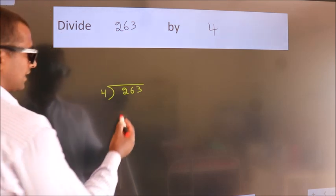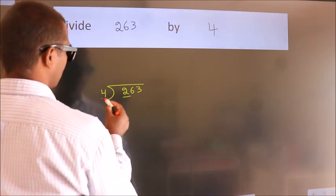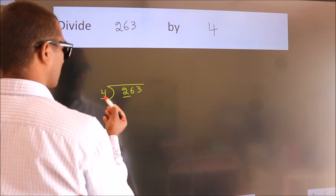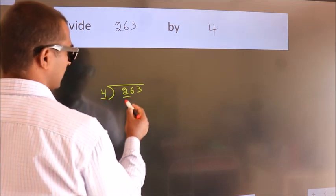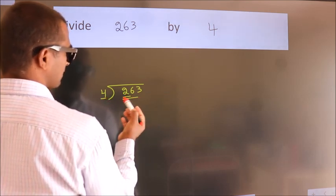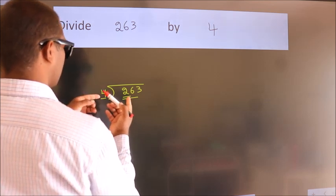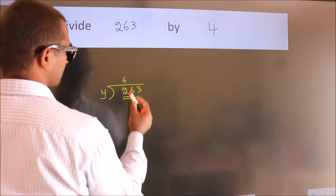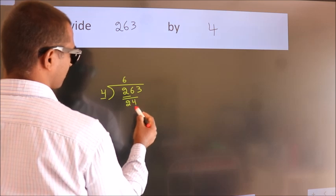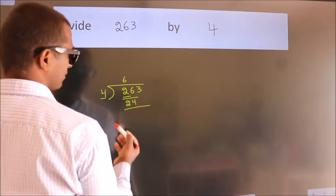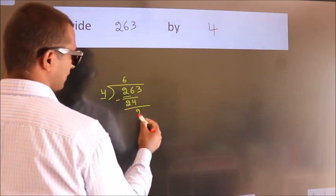Next, here we have 2, here 4. 2 is smaller than 4, so we should take 2 numbers: 26. A number close to 26 in the 4 times table is 4 times 6 equals 24. Now we should subtract. We get 2.